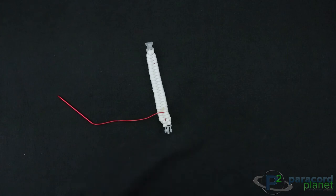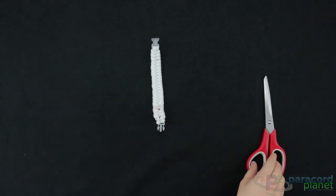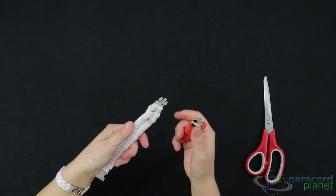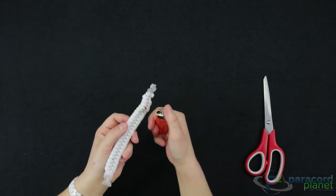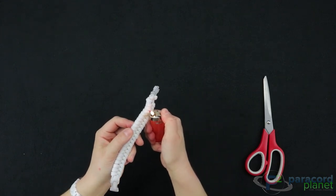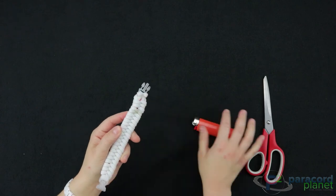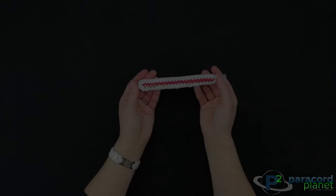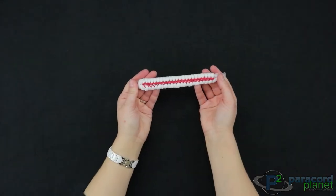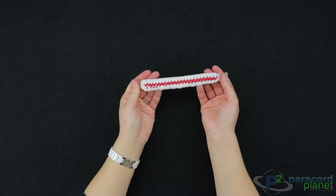And all you'll do is snip it. Use the lighter very gently since this will burn a whole lot faster than 550 cord. So there you have it, the baseball themed center-stitched paracord bracelet.